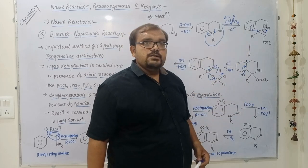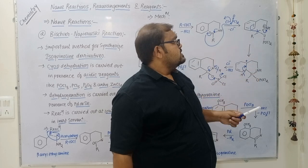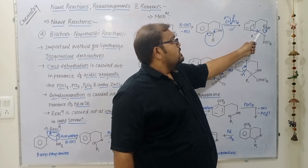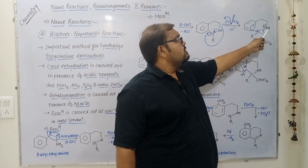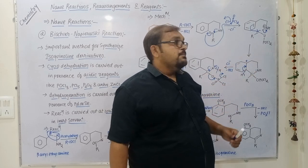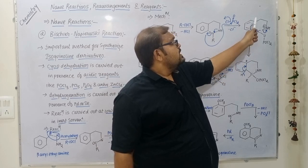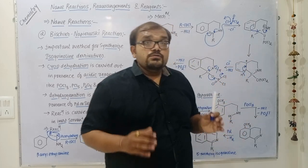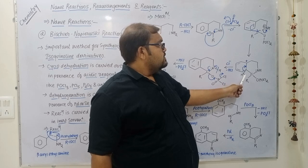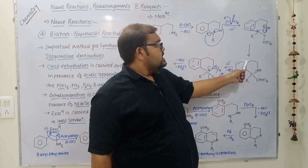One chlorine from POCl₃ is removed as Cl⁻, giving an intermediate product. Nitrogen now has a positive charge. The pi bonding electrons from the aryl ring attack this carbon, and the pi bonding electrons shift over nitrogen to satisfy the nitrogen charge. This carbon gains positive charge, and to satisfy it, a proton is lost as H⁻ while the bonding electrons shift between the two carbons.